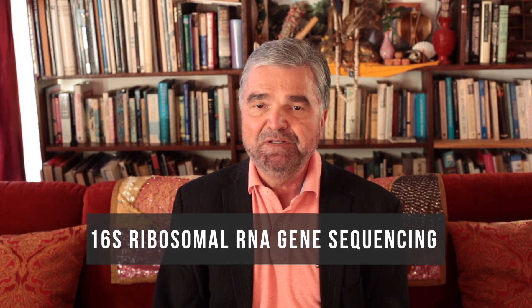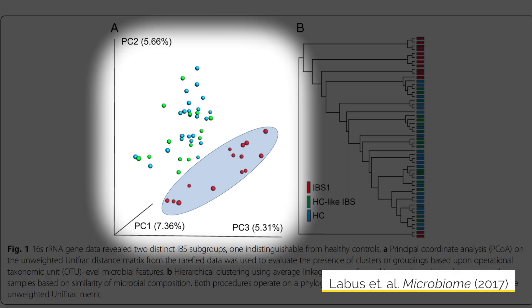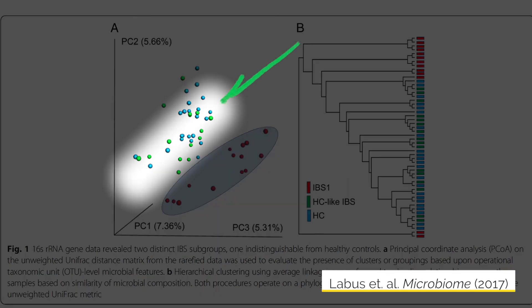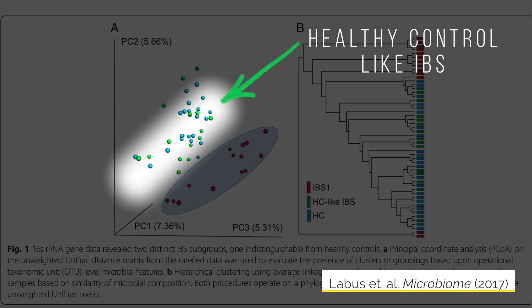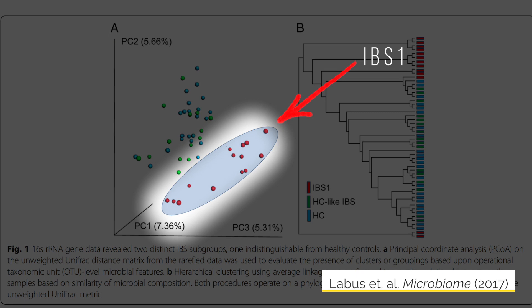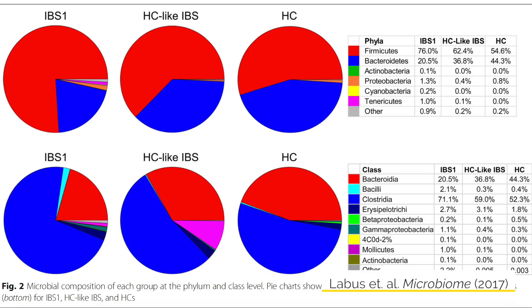Using a technique called 16S rRNA sequencing, we were able to distinguish two separate groups of IBS patients: one that had a gut microbial composition and community structure identical to healthy controls, and one that differed significantly. Part of the difference was related to the ratio of two taxa of microbes — the Firmicutes and Bacteroidetes.